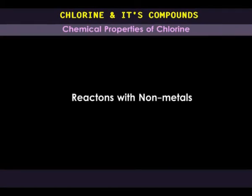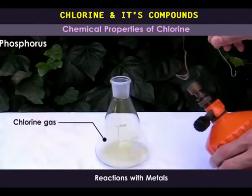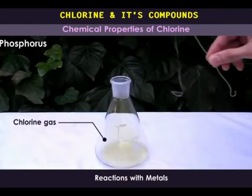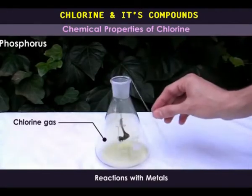Reaction with non-metals. Chlorine reacts with red phosphorus to give phosphorus-3 chloride and phosphorus-5 chloride.